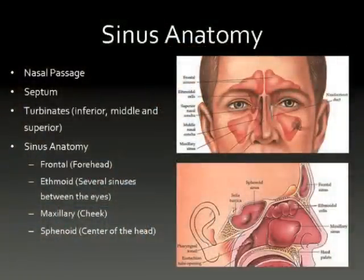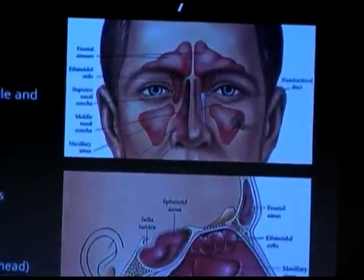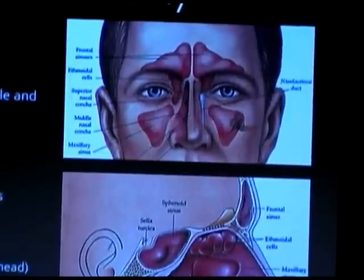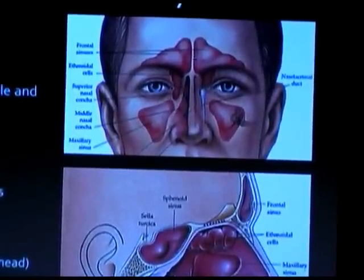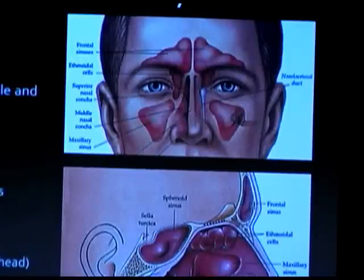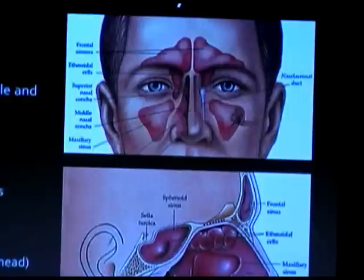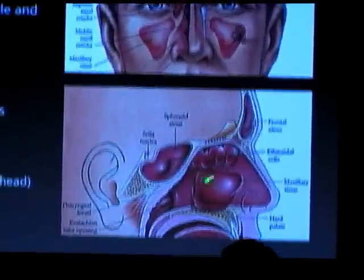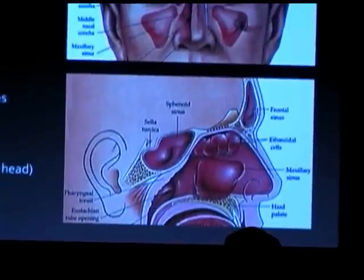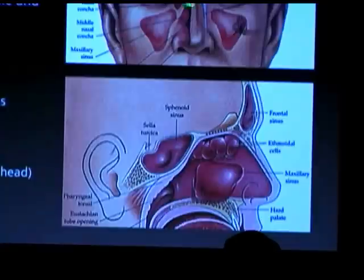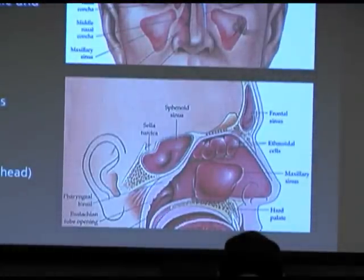The word sinus is just a blind-ended pouch with an opening to the outside, so there are lots of different kinds. A sinus isn't necessarily a normal structure - it just means a closed pouch with a drainage pathway to the outside. You have several sets: frontal sinuses in your forehead, maxillary sinuses in your cheeks, ethmoid sinuses between your eyes, and a big one in the center of your head called the sphenoid sinus.